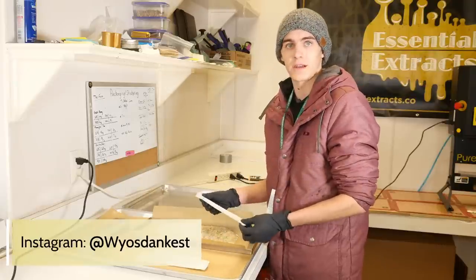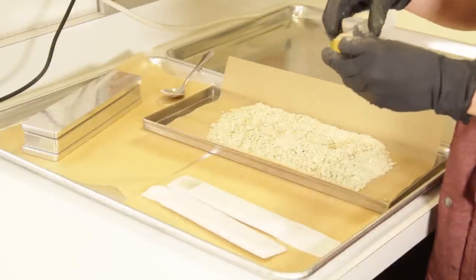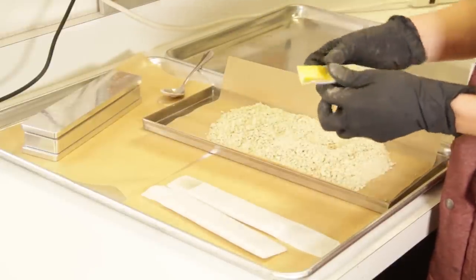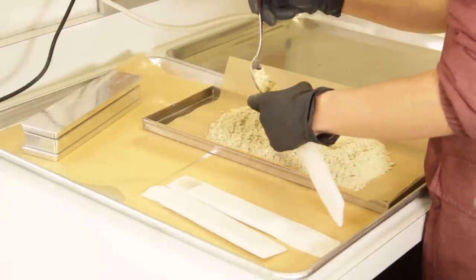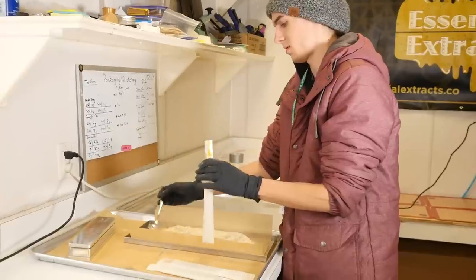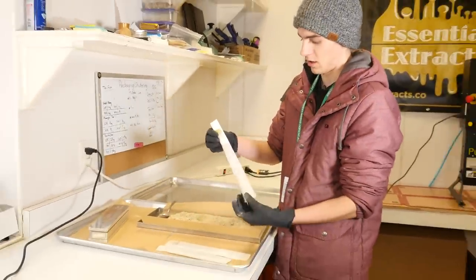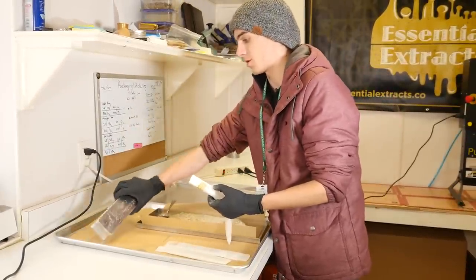We pack about 40 grams at a time into them. So I just use something to prop this open. Right now we're using a business card. We just take the hash and pack it in. And then once it is full to the top, we'll use the pure pressure air pre-press.